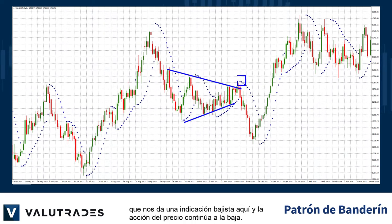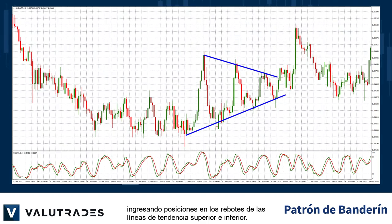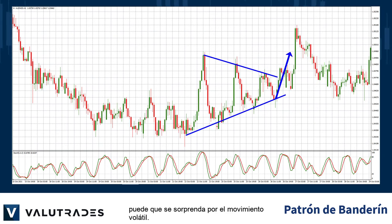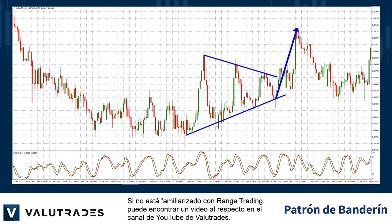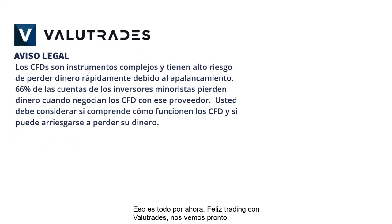Price action carries on downward. One way to trade a symmetrical pennant is just as you would execute range trading, by entering positions on bounces off the upper and lower trend lines. Then when price action finally breaks through one of the trend lines, you might just be surprised by the volatile movement. If you are not familiar with range trading, you may find a video on the Value Trades YouTube channel.